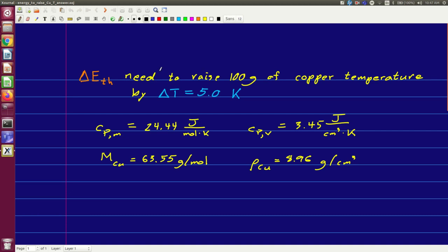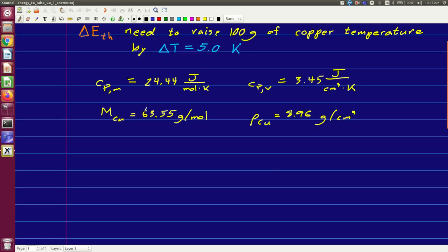You can, of course, use the definitions of these various quantities to derive an equation, but I'm going to show you how to do it entirely from unit analysis. We want a change in thermal energy, and so that is going to be in joules. Well, how can we combine the quantities that we have to get joules?